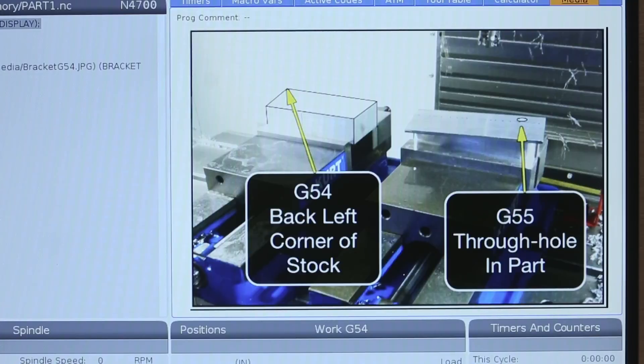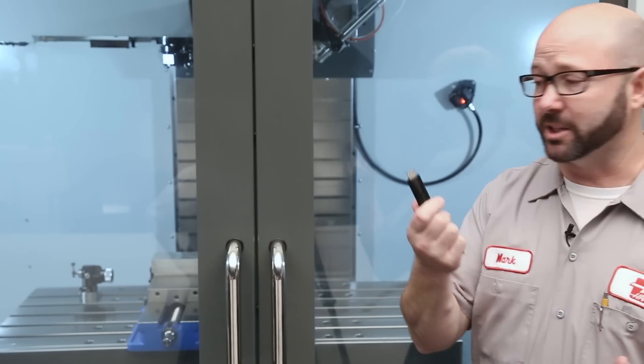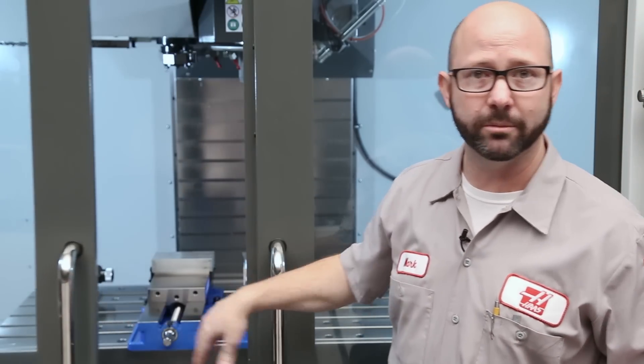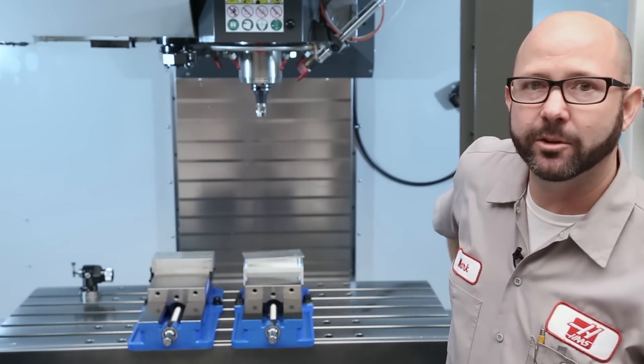So copying our media files from our USB sticks onto the control, that's easy, and getting those media files to be displayed from within our program is really simple as well. But if you're like me, I'm using my phone a lot to take pictures of my setup, add some annotations, and then display that information for my operator. In fact, the pictures that we saw on the control were made and edited on my iPhone.